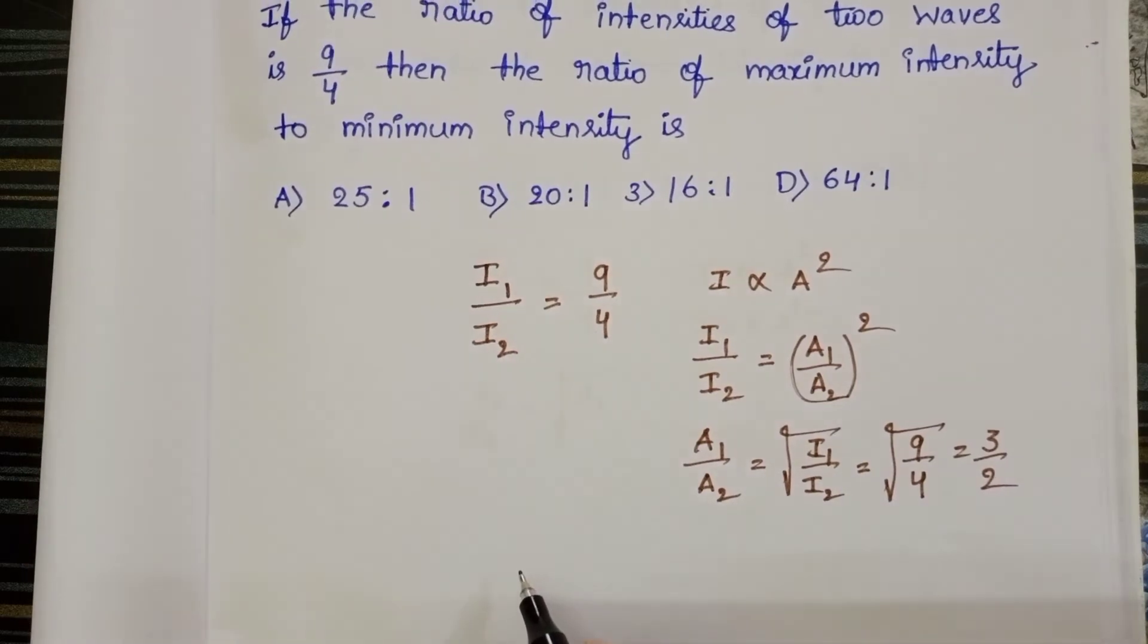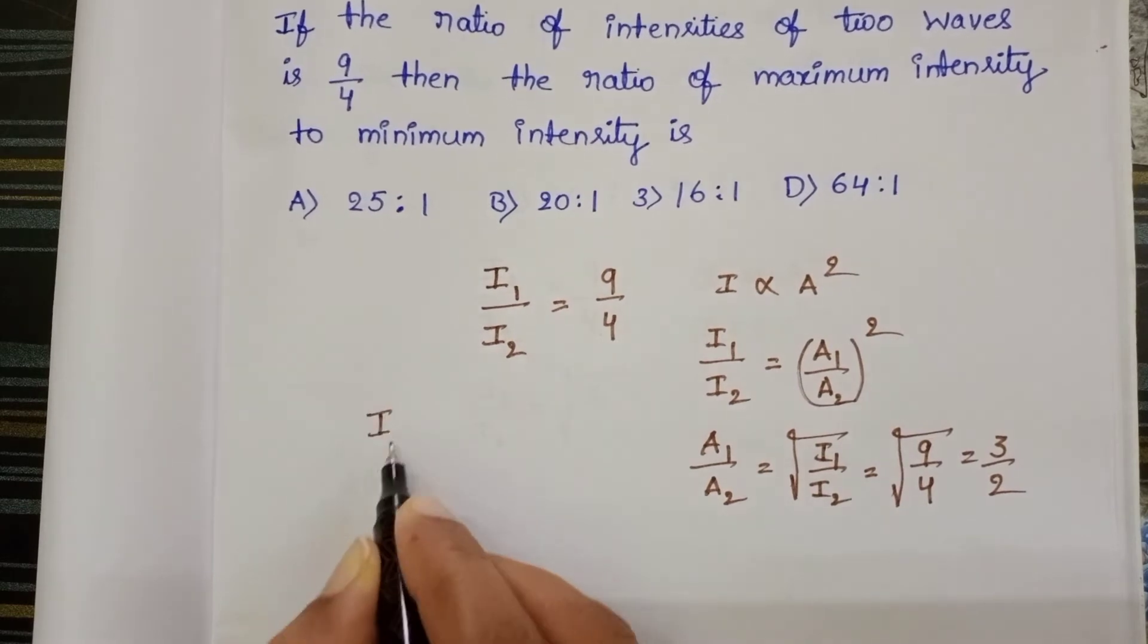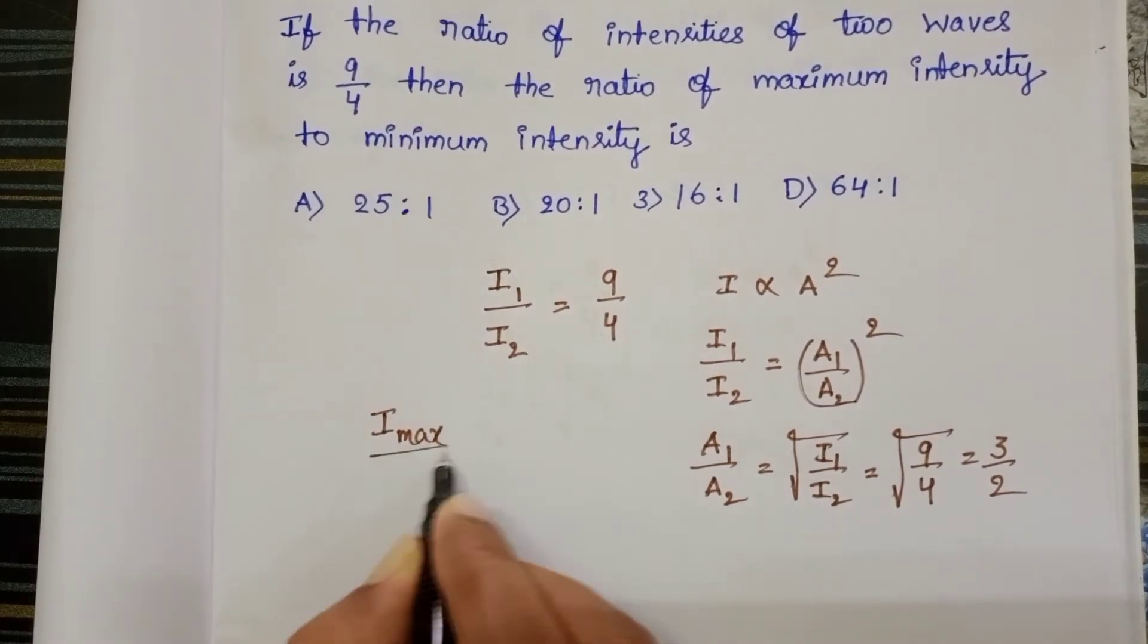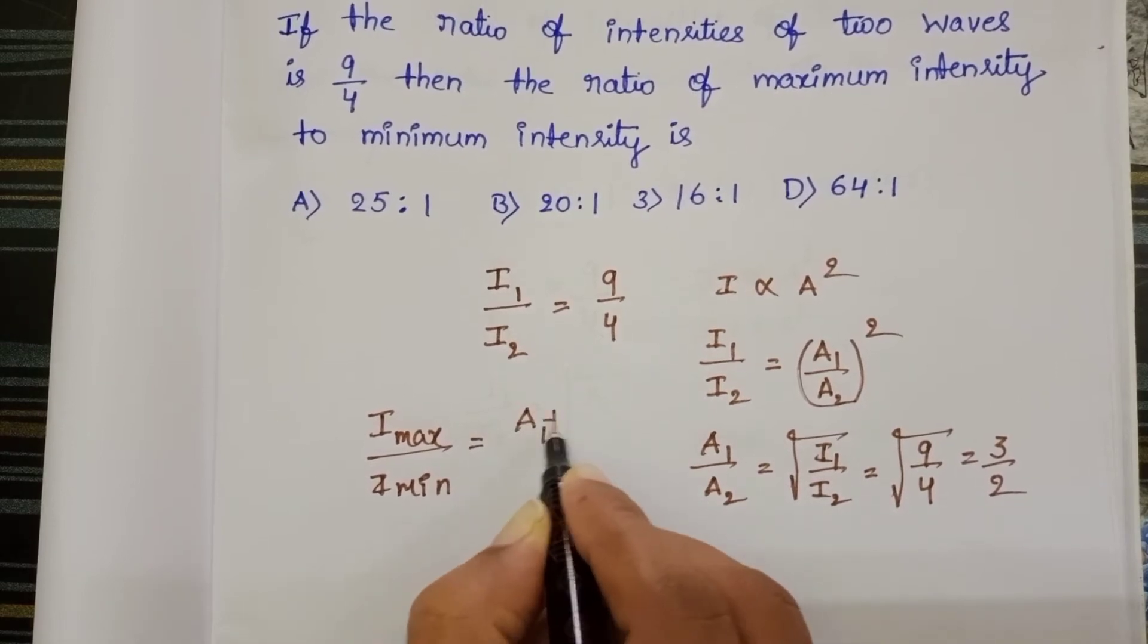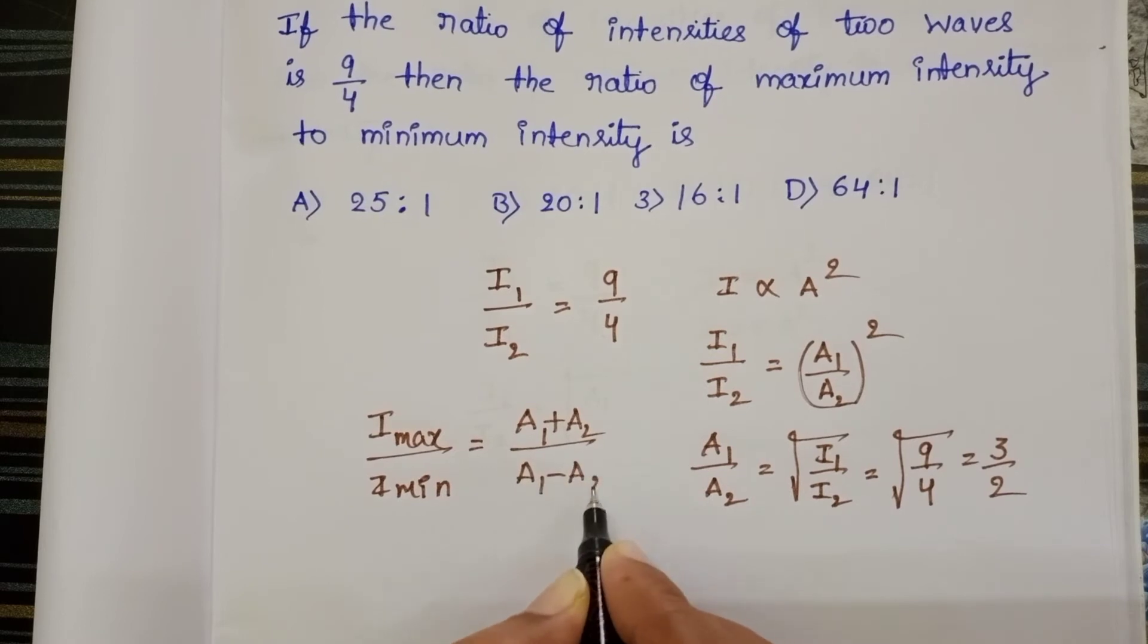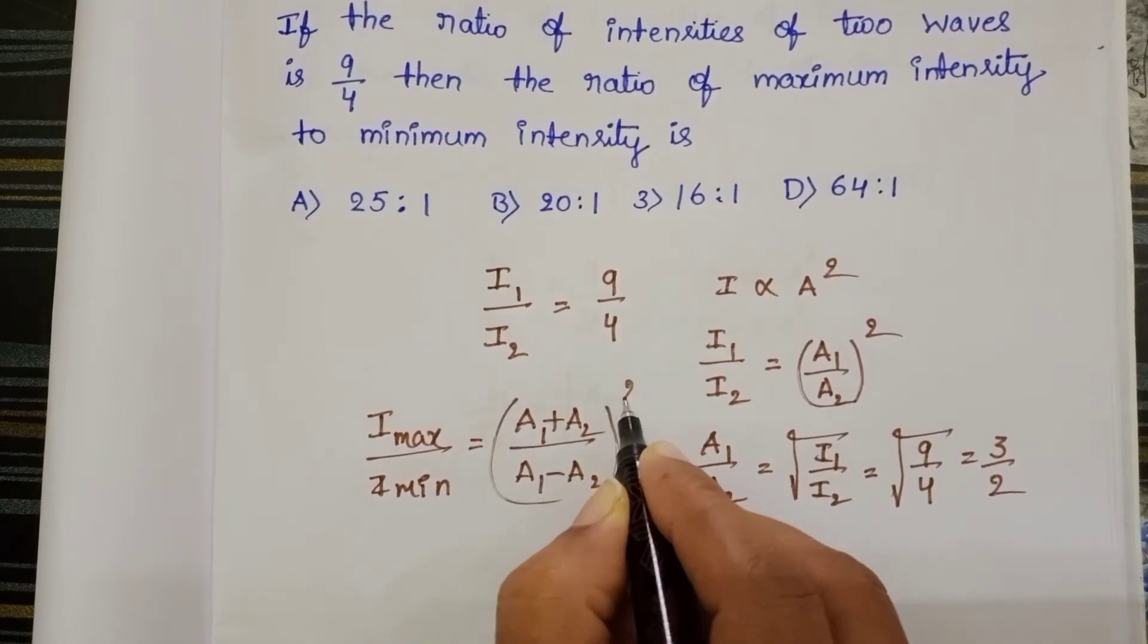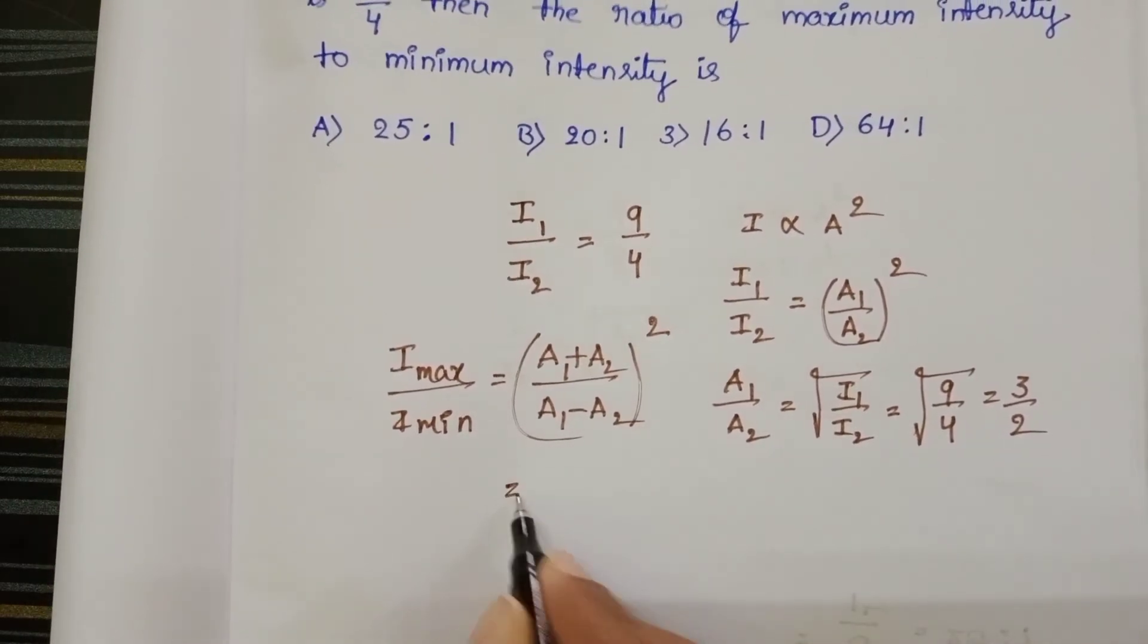Now we want maximum to minimum intensity. I maximum by I minimum equals A1 plus A2 by A1 minus A2 whole square. This is the formula to calculate the maximum to minimum intensity.